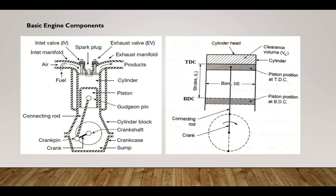Next nomenclature is stroke, denoted by length L. Stroke L refers to the distance traveled by the piston from top dead center to bottom dead center. In the figure, you can see the piston position at top dead center and at bottom dead center, along with all components including inlet valve, exhaust valve, spark plug, combustion chamber, piston, connecting rod, and crankshaft. This diagram shows the petrol engine — that's why there is a spark plug. In a diesel engine diagram, there would be a fuel injector instead.